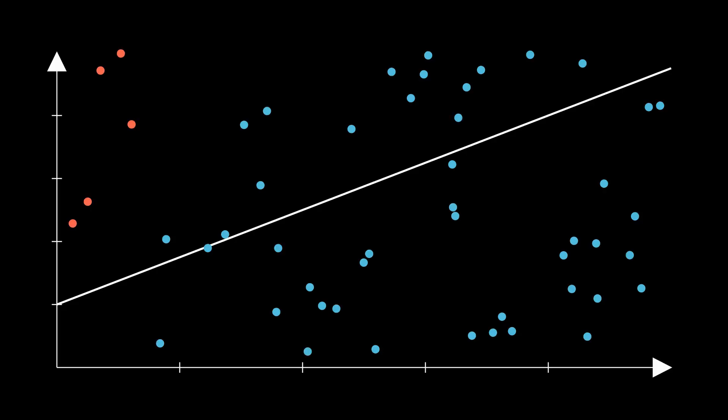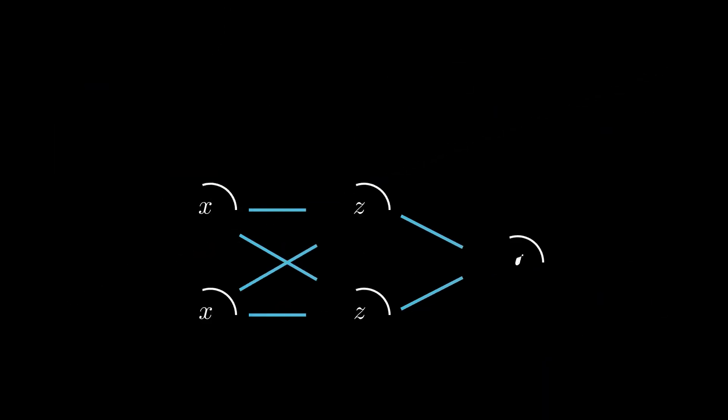But suppose that we have data that looks like this. This data cannot be separated by a straight line. It's much better suited for a curved line. But we're only adjusting the gradient and the y intercept with our neural network. This keeps our decision boundary straight.